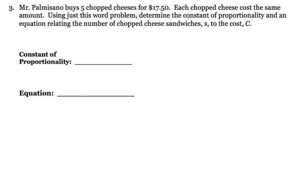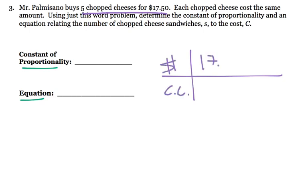Alright, so sometimes they'll ask for an equation or the constant of proportionality just in a word problem. So we kind of got to look for the ratio. Mr. Palmisano buys 5 chopped cheeses for $17.50. Each chopped cheese costs the same amount. So per one, they're all going to cost the same. Using just this word problem to determine the constant of proportionality and an equation.